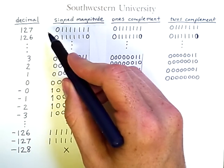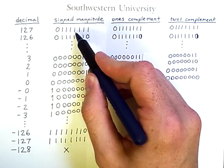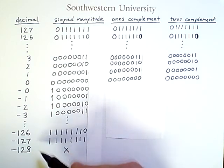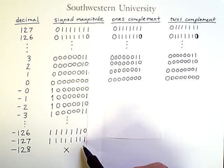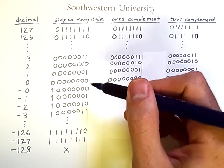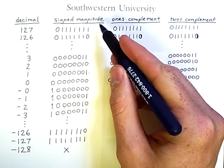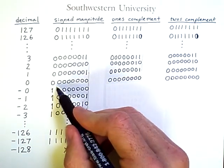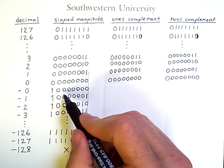That highest number, 127, is represented with a zero — meaning it's a positive number — and then 7 ones. Negative 127 is represented with 8 ones, because the first bit represents a minus sign and the remaining bits are the magnitude. The problem of having two zeros in signed magnitude representation has already been mentioned: one zero consists of eight zeros, and negative zero consists of a one followed by seven zeros.